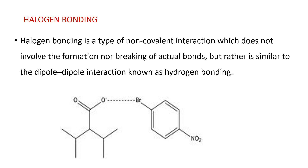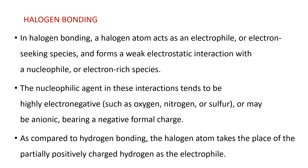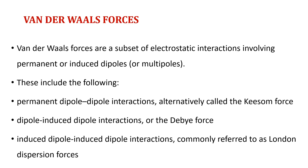Another type of electrostatic interaction is halogen bonding. This is similar to that of hydrogen bonding. In halogen bonding, a halogen atom acts as an electrophile or electron-seeking species and forms a weak electrostatic interaction with a nucleophile. The nucleophilic agent in these interactions tends to be highly electronegative, for example oxygen, nitrogen, or sulfur, or may be anionic bearing a negative formal charge. As compared to hydrogen bonding, the halogen atom takes the place of the partially positively charged hydrogen as the electrophile.